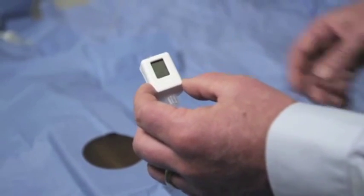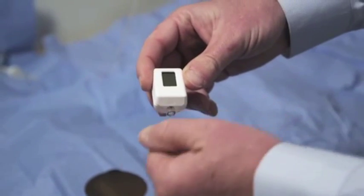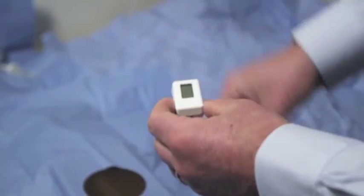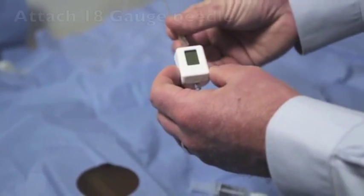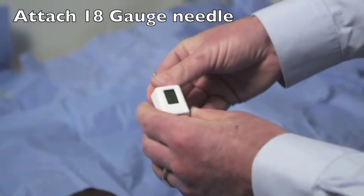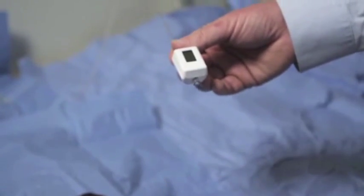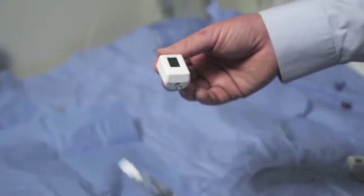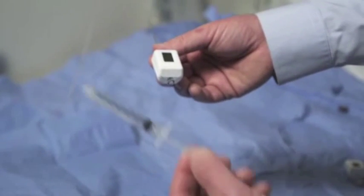Once the device is opened, remove the rear cap and attach the distal end to an 18 gauge needle. The proximal end can be attached to any syringe containing sterile saline.